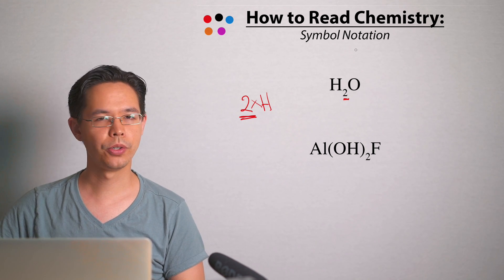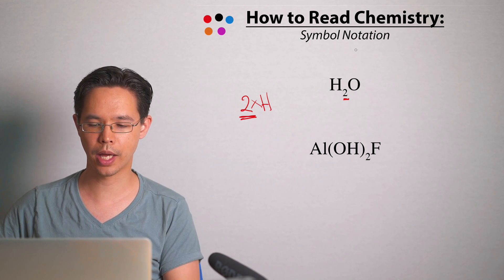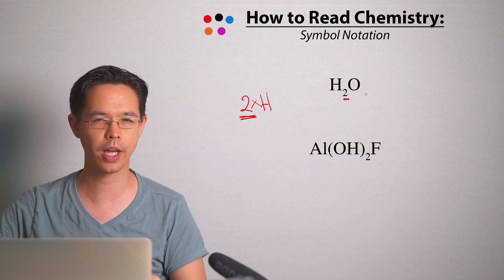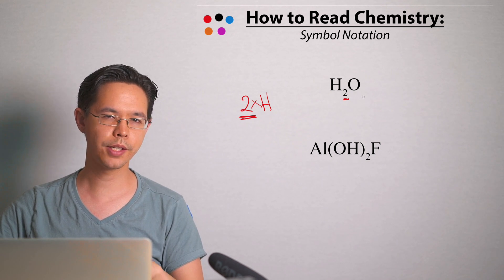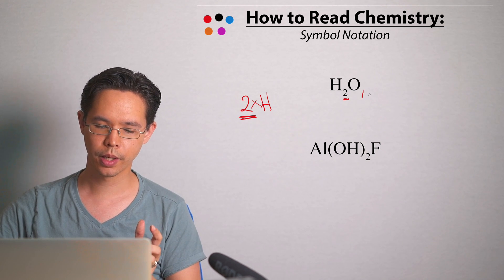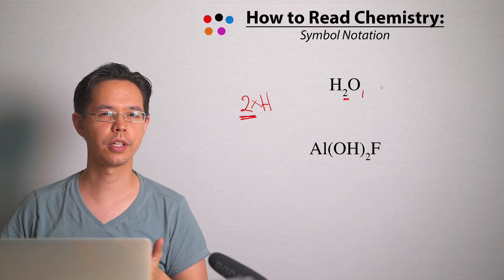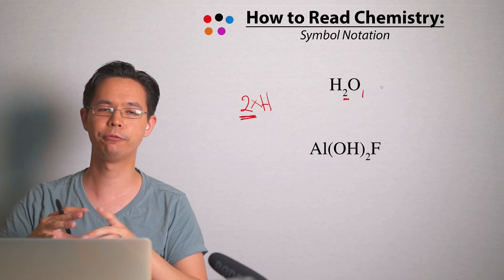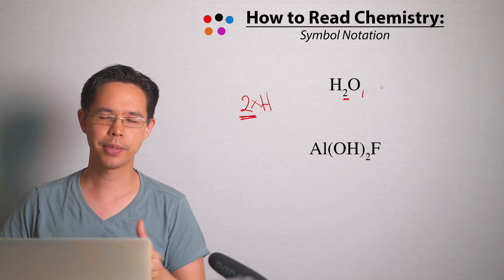The O doesn't have a number written in its corner for how many. In fact, it's actually a number of one, but we never draw the number one in our formulas or equations because it's not really needed.